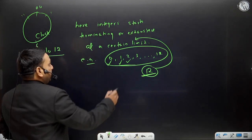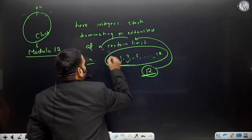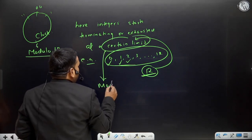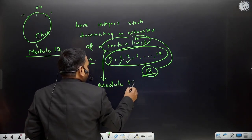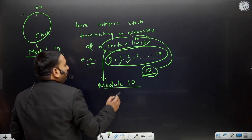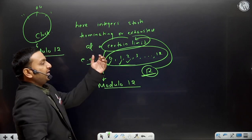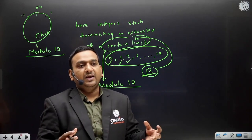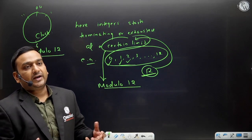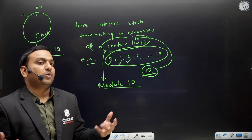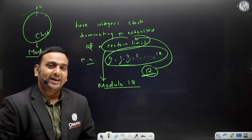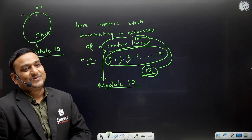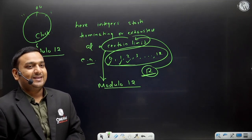That certain limit - if the limit is N, let's say 10, let's say 20 - then you will call it modulo N, modulo 10, or modulo 20, like that. So modulo is clear. Fair enough.